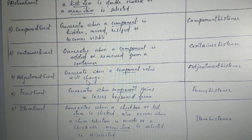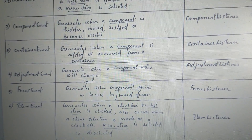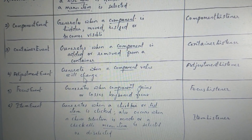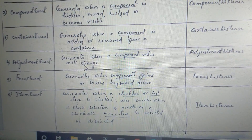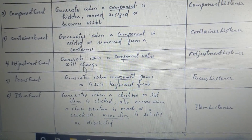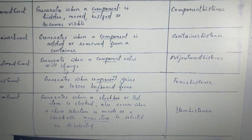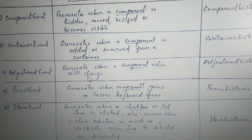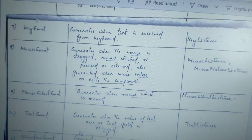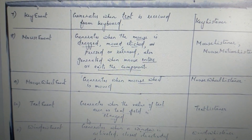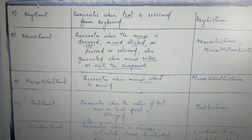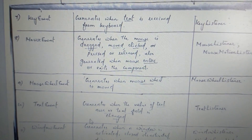Item event: we will click on a list item or click on the menu. We will check the item event. The corresponding listener is the item listener. Next, key event: we will press or type a key. That is the key event. The corresponding listener is the key listener.